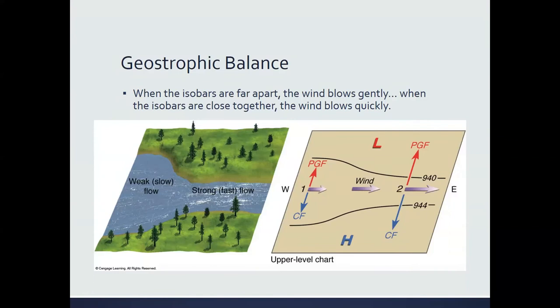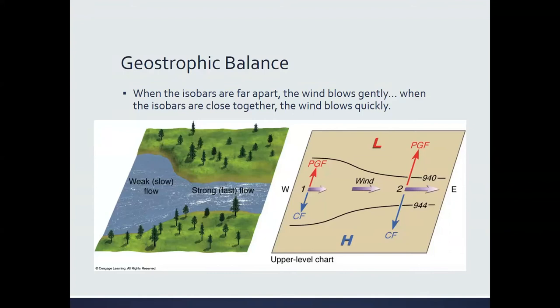The same thing happens in geostrophic balance: when isobars get closer together, wind speeds become much faster. This is all well and good for straight-line winds when isobars are straight. But in reality, most isobars have some curvature to them. That curvature results in a new type of acceleration called centripetal acceleration. If the isobars are curved, the wind still flows parallel to them, but it's forced to change directions.